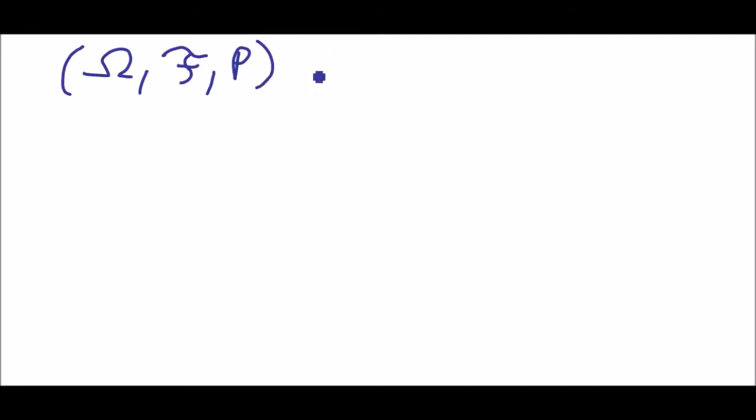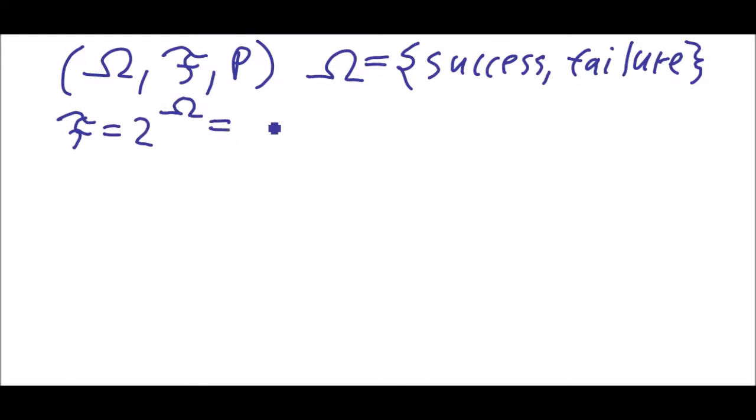And how does it look like? So in our case we have omega is success and failure. Either you win the set or you don't. And F is the power set of omega which is empty set, success, failure, and omega.